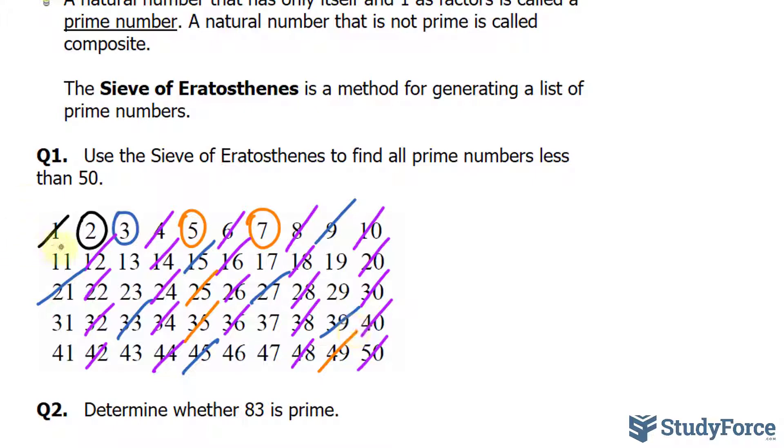Lastly, we have 11. Because 11 is greater than the square root of 50, which is approximately 7.07, we can stop looking for composites and circle all remaining numbers in the list, as they will be prime.